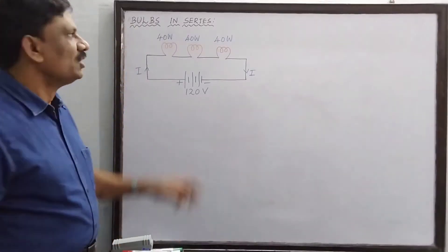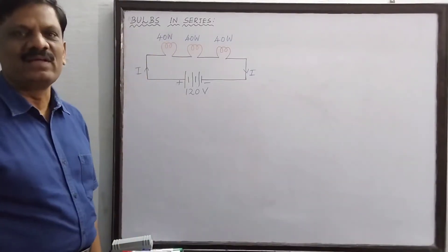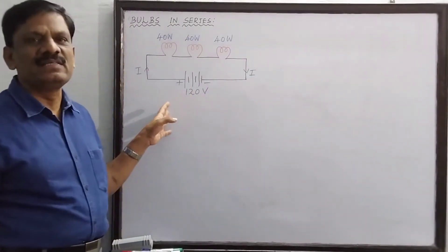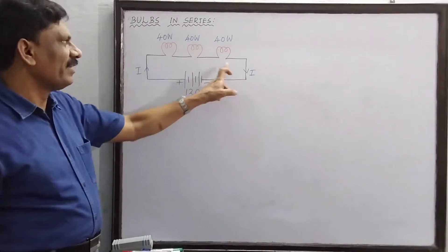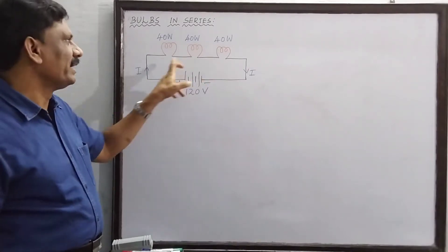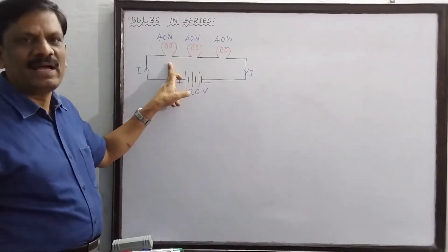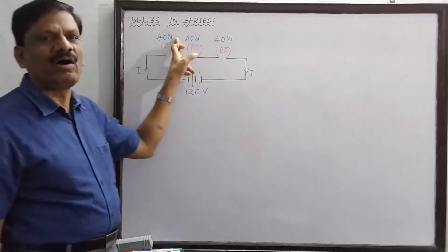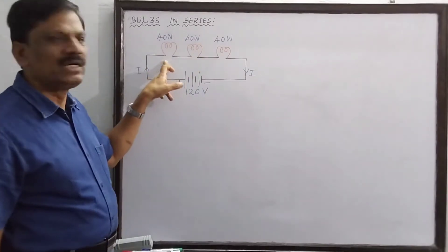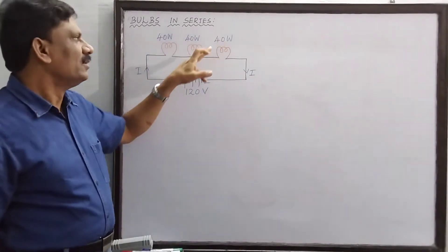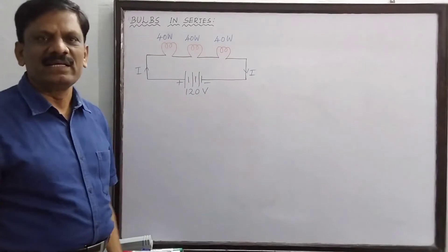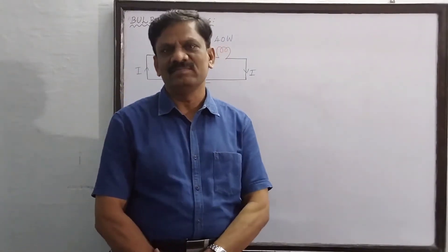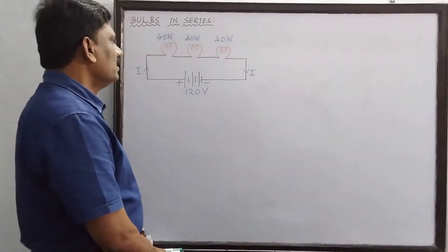Hi students, today we are going to discuss the topic of bulbs connected in series. In the circuit you can see there are three filament bulbs connected in series. Each bulb has a power of 40 watts and is rated to operate at a potential difference of 120 volts each. We are going to see what happens to their brightness when connected in series.